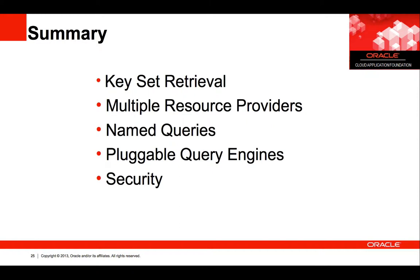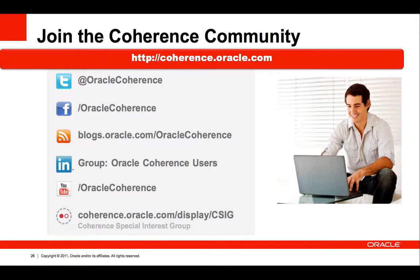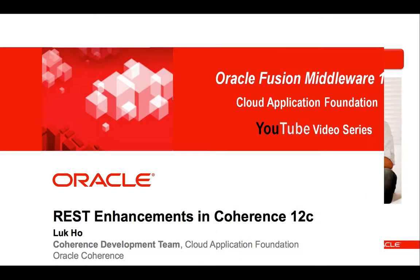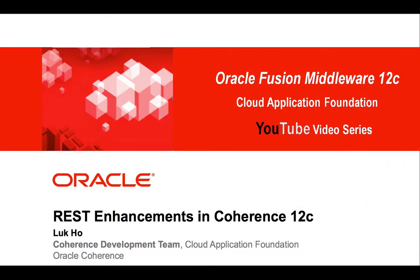To summarize, the enhancements added to Coherence REST in the 12.1.2 release are keyset retrieval, multiple resource providers, named queries, pluggable query engines, and security. If you have any feedback or suggestions for Coherence, we would like to hear from you — we invite you to join this large, vibrant community. We have significant engagement through social media channels like Twitter and Facebook. This concludes the screencast for Coherence REST enhancements in the 12.1.2 release. Thank you for watching.